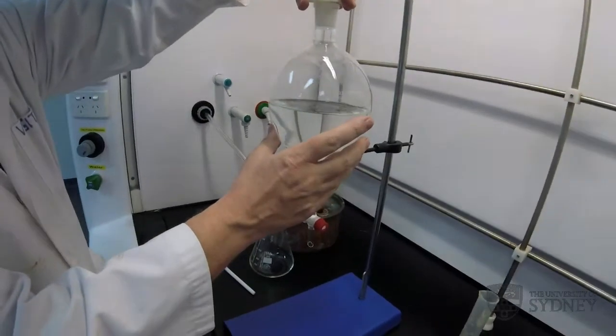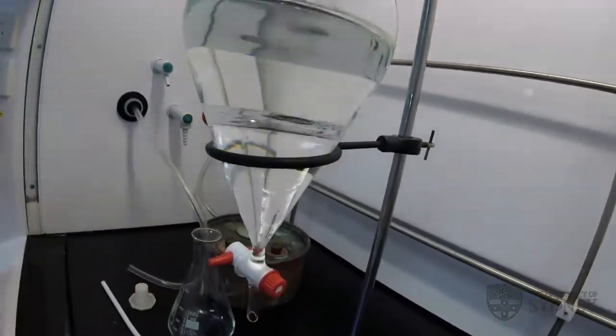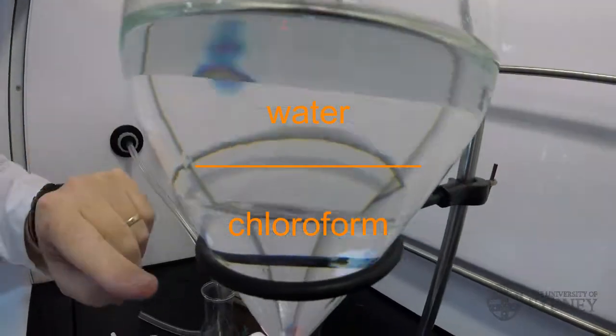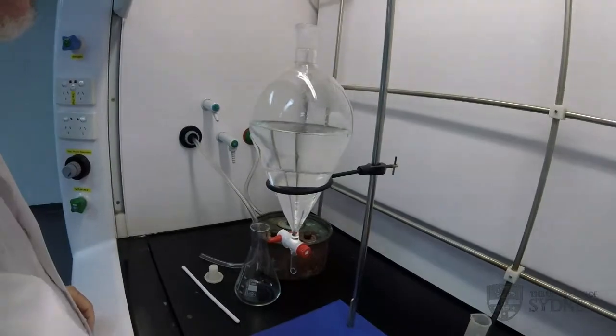So I'll start by adding that into the separatory funnel which already contains two layers of immiscible liquid: water on the top and chloroform on the bottom, because chloroform is more dense than water.